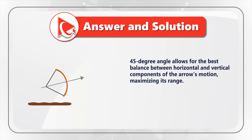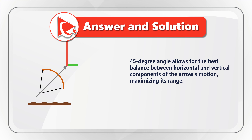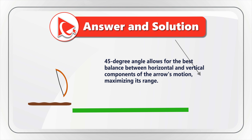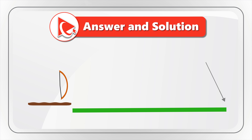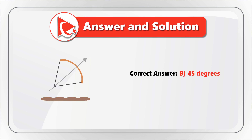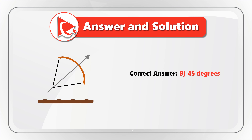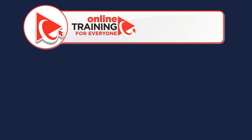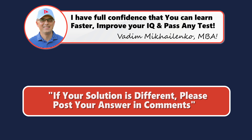45 degrees allows for the best balance between horizontal and vertical components of an arrow's motion, maximizing its range. So the correct answer here is Choice A: 45 degrees. Did you get to the same answer? If not, please make sure to share your thoughts and rationale in comments so we can all learn.